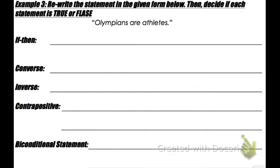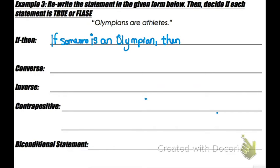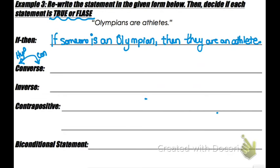Example three: rewrite the statement 'Olympians are athletes' in if-then form and decide if it's true or false. In if-then form: if someone is an Olympian, then they are an athlete. The converse means we switch the hypothesis and the conclusion — and we also decide if each statement is true or false.